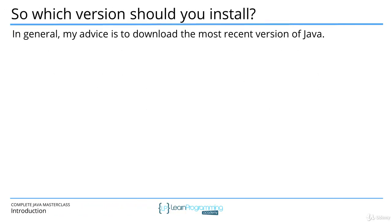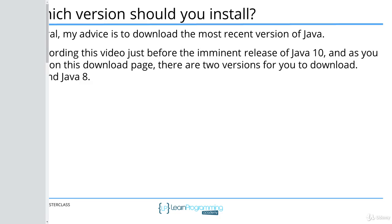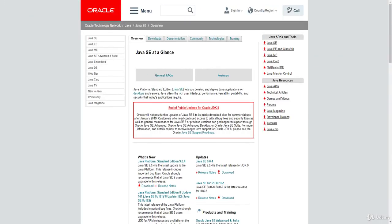So which version of Java or the JDK should you install? In general, my advice is to download the most recent version of Java. I'm recording this video just before the imminent release of Java 10, and as you can see on this download page — which I'll bring up now — there are actually two versions available: Java 9 and Java 8. When Java 10 is released, you'll most likely see Java 9 removed and replaced by Java 10, with Java 8 still available.